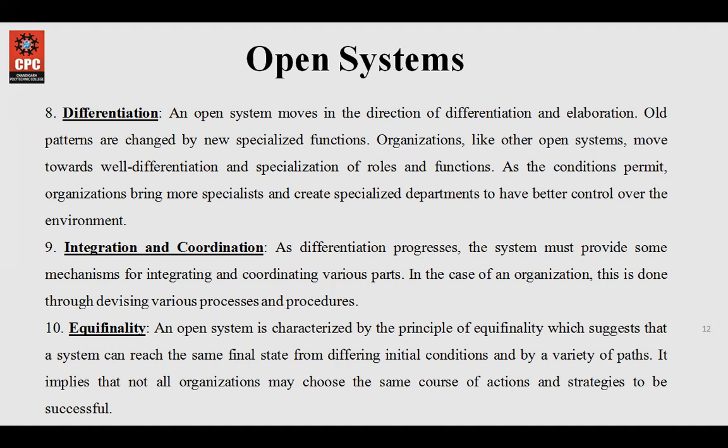Then comes integration and coordination. Every component or subsystem needs to work as a whole and coordinate with each other to achieve the predefined objective of any system. Then comes equi-finality. This term implies that goals are achieved through different courses of action and a variety of paths. For example, going from Chandigarh to Delhi — there are 10 to 15 roads to choose from, but you choose the one that saves fuel and reaches the destination in the least time. That is equi-finality: reaching the final goal while choosing from different paths.